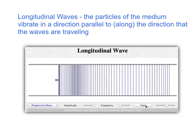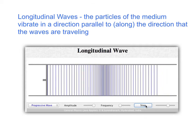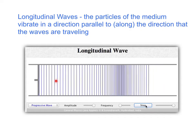There are two major types of waves. The first one, longitudinal waves. The particles of the medium vibrate in a direction that is parallel to, or along, the direction that the waves are traveling. So here you're going to see waves, longitudinal waves, moving from left to right. But the particles of the medium are basically just vibrating side to side.